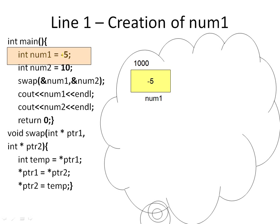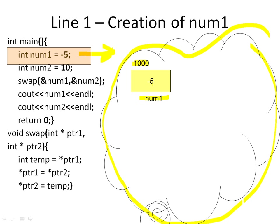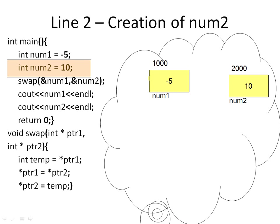When we see this amber band, that's the line being executed in the code. So num1 is minus 5, and in my RAM — this is my RAM cloud here — I create a variable of integer type called num1. Its memory address is 1000, and minus 5 has been stored inside it. Then I execute the statement 'int num2 = 10', so I create another variable in the RAM called num2, store 10 inside it, and imagine its address is 2000.